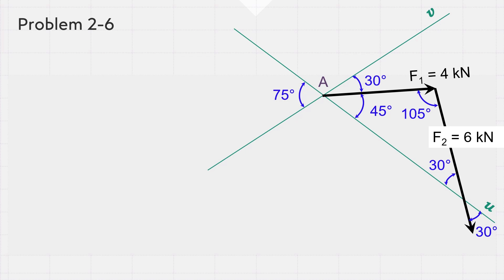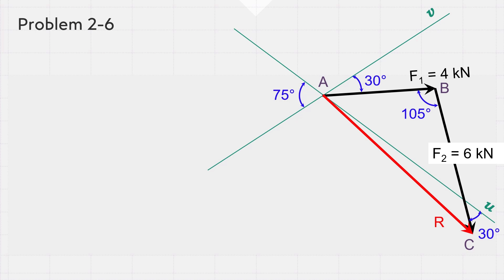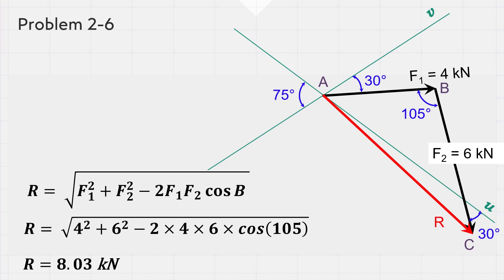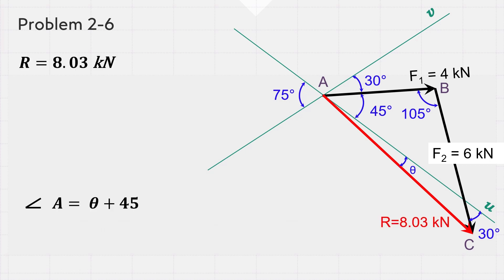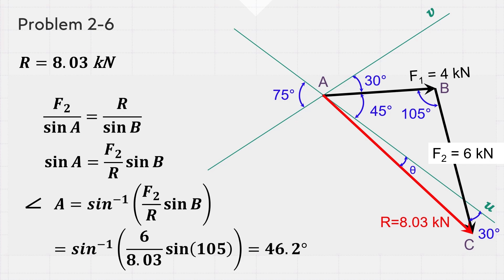It is obvious that this is the angle between the two forces F1 and F2. Now draw an arrow starting from the tail of F1 and ending at the head of F2; this arrow represents the resultant force of F1 and F2. In triangle ABC, applying the cosine law results in R equals 8.03 kN. Next, it is required to find the direction of the resultant force R measured clockwise from the positive U-axis, or angle theta. Using the sine law, the measure of angle A equals sine inverse of F2 multiplied by sine B divided by R, equals sine inverse of 6 multiplied by sine 105 divided by 8.03, equals 46.2 degrees.